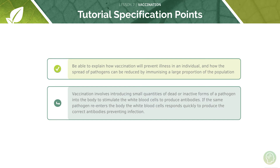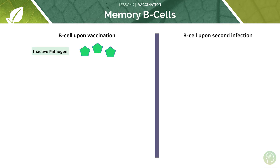Now let's look at the same memory B cell process as before, but this time instead of a first and second infection, there's a vaccination followed by exposure to the virus. It's the same process — we're replacing the first infection with vaccination. So we vaccinate the person by introducing the inactive form of the pathogen into their body.